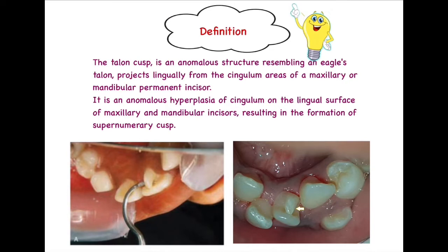By definition, Talon's Cusp is an anomalous structure which resembles an eagle's talon, that projects lingually from the cingulum area of maxillary or mandibular permanent incisors. This particular anomaly originates from the cingulum area — the prominent bulge found on the lingual aspect of anterior teeth — and a structure resembling an eagle's talon emerges from it. This anomaly is seen in maxillary or mandibular permanent incisors.